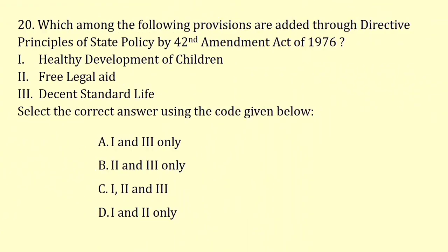Which of the following provisions were added through Directive Principles of State Policy by the 42nd Amendment Act of 1976? Healthy Development of Children and Free Legal Aid were added. The third one is not added. So the correct answer is option D.